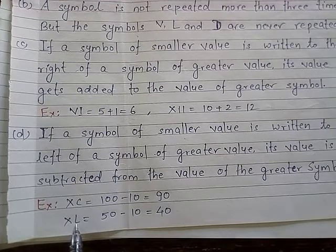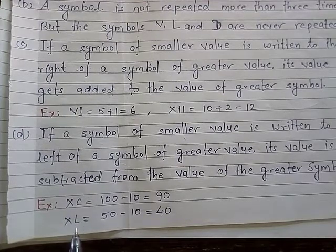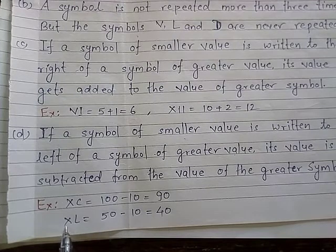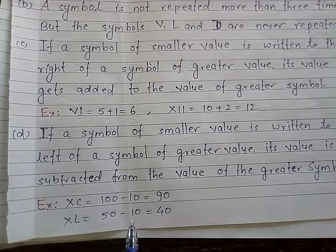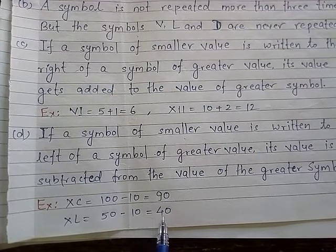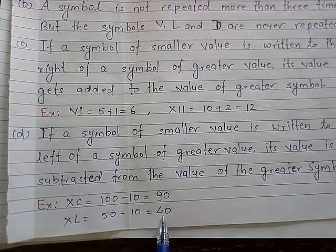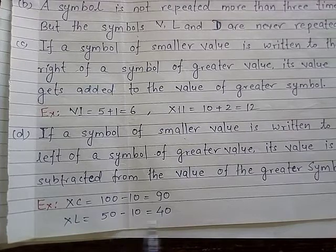Another example: XL — X is 10, L is 50. The symbol of smaller value (X) is to the left of the symbol of bigger value (L), so we subtract: 50 minus 10 equals 40. Therefore, XL is the symbol for 40.